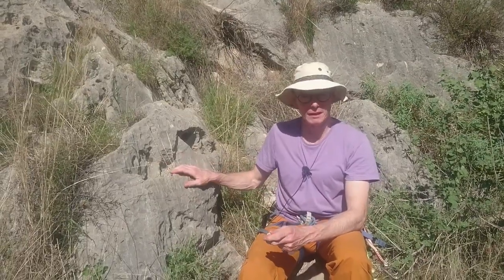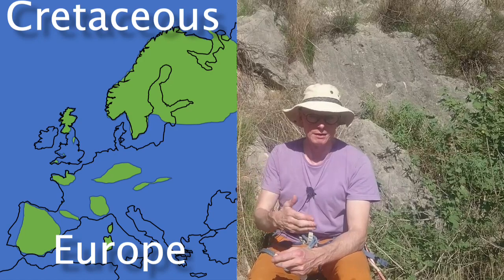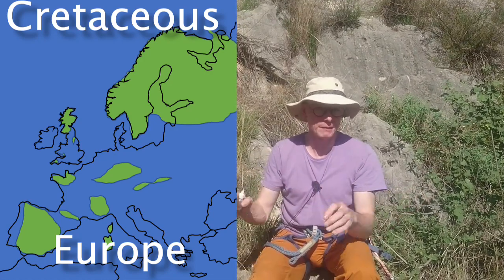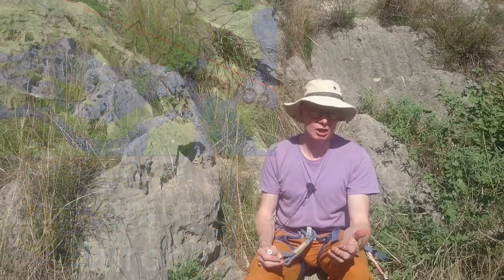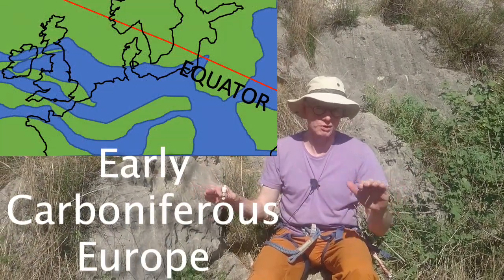This is the next in the climbers guide to rock types, and this is limestone. Limestone was deposited in shallow tropical seas. There were periods during Earth's history when pretty much all of mainland Europe was under a shallow tropical sea — sea levels were slightly higher — so during the Jurassic and Cretaceous it was all flooded.